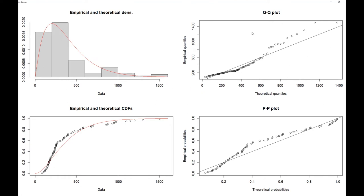You also have the Q-Q plot, where theoretical quantiles are on the horizontal axis and empirical quantiles on the vertical axis. If the fit is perfect, all those points — which are the observations — should line up on the straight line. If they deviate from the straight line, this means the fit is not perfect. Keep in mind that you never have a perfect fit in practice.